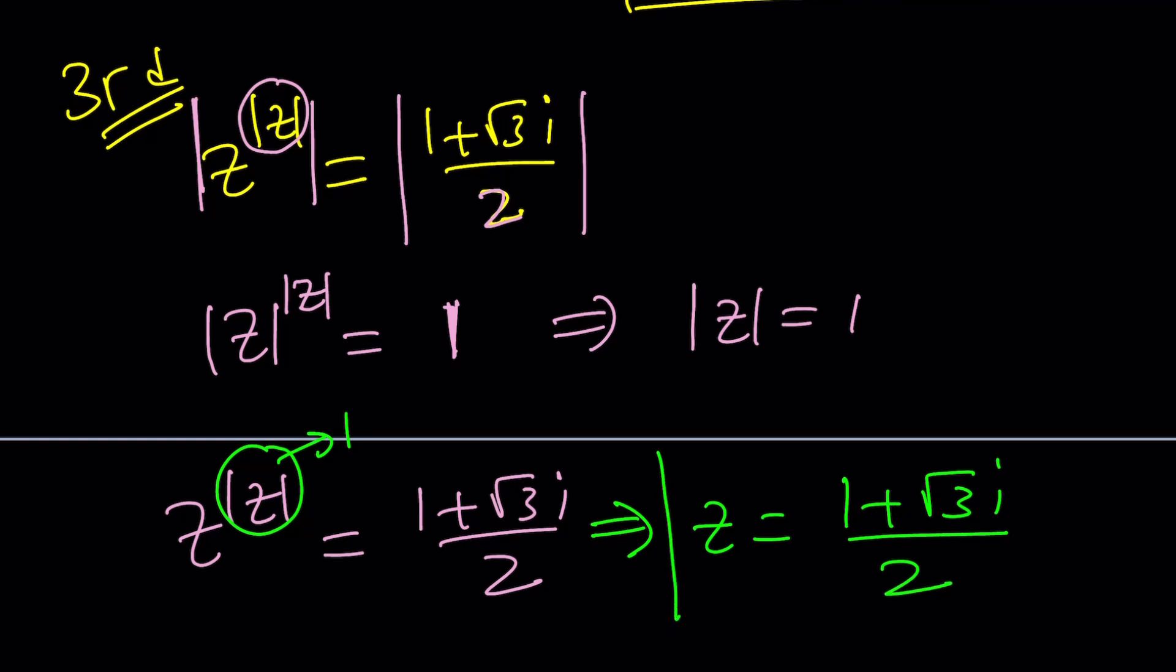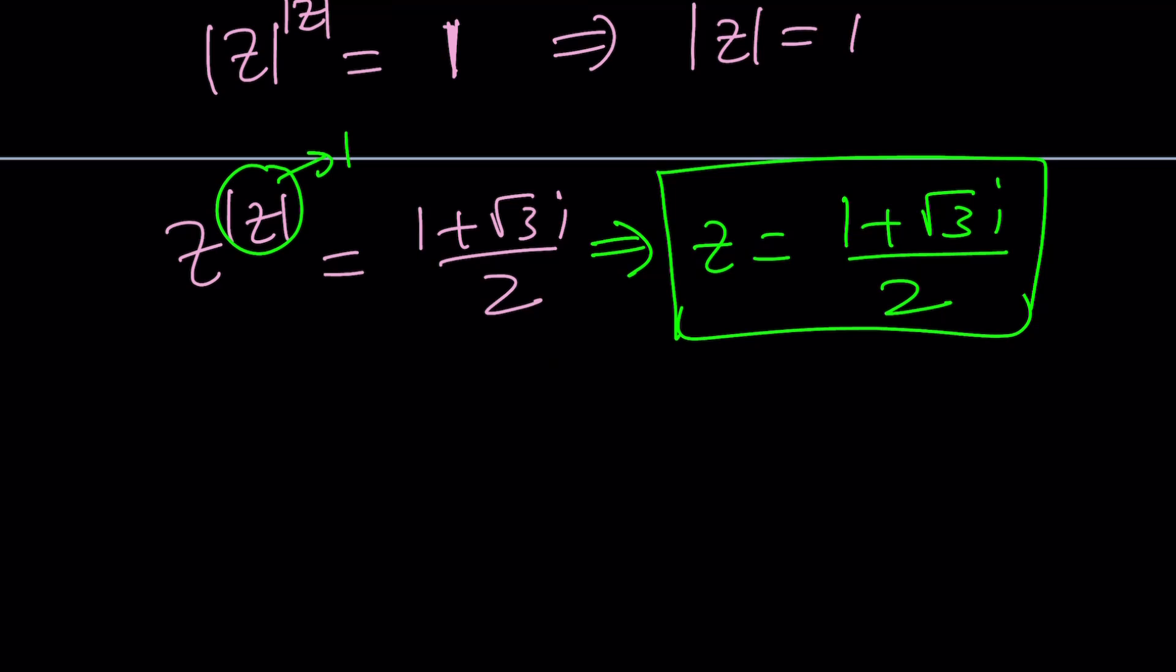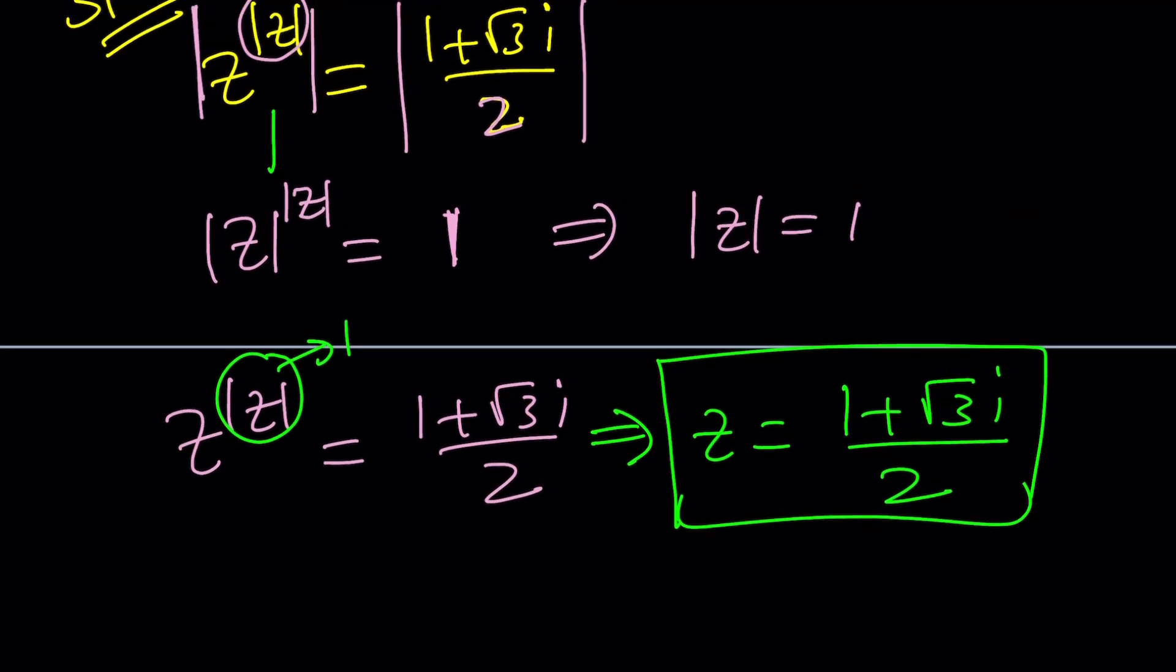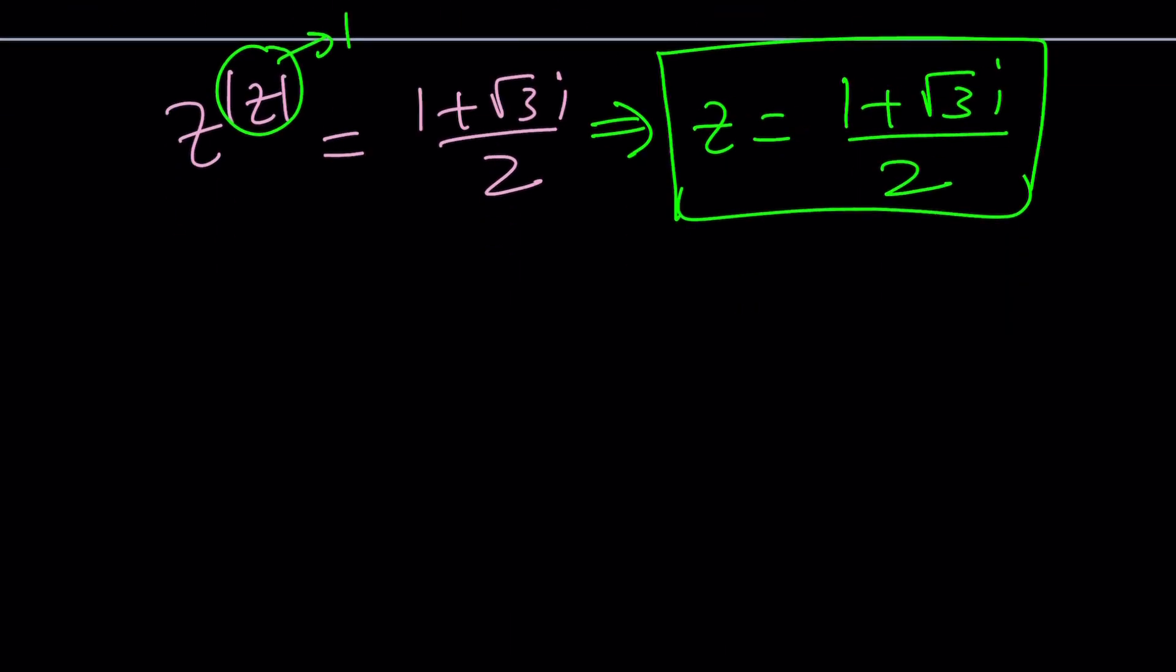This number, right? Here's the million dollar question: are these always equal? In other words, if you have z to the power r where r is a real number, is this always equal to this? And if r is not real, is there an identity as well?